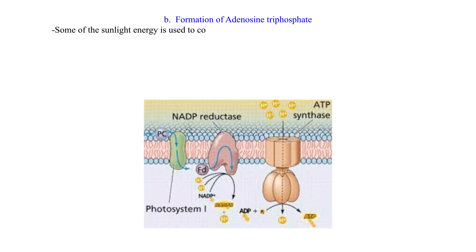B. Formation of adenosine triphosphate: Some of the sunlight energy is used to combine adenosine diphosphate molecule in the plant tissues with a phosphate molecule to form adenosine triphosphate, ATP.